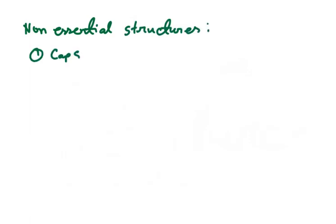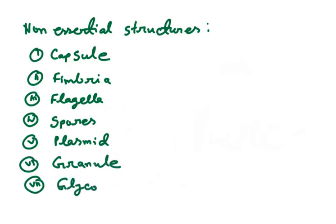There are seven other non-essential structures: capsule, fimbriae, flagella, spores, plasmid, granule, and glycocalyx.